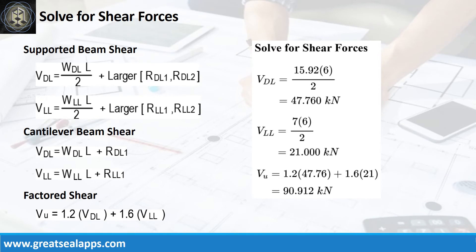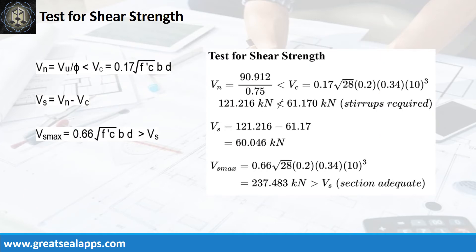The shear force from dead load is 47.76 kN and from live load is 21 kN, for a factored shear force of 90.912 kN. The nominal shear force is 121.216 kN — greater than the concrete capacity of 61.17 kN. Additional shear capacity from stirrups is 60.046 kN, which is less than the maximum stirrup capacity of 237.483 kN.